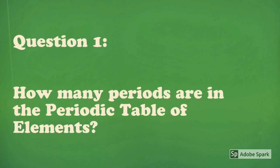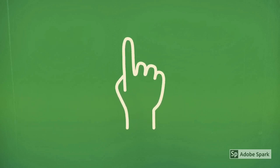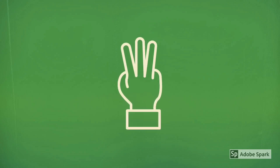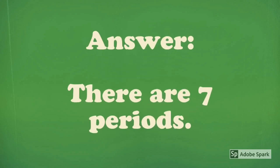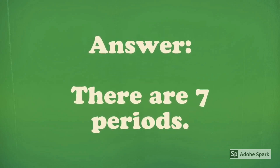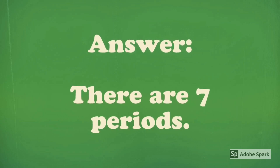Question 1: How many periods are in the Periodic Table of Elements? Answer: There are 7 periods in the Periodic Table of Elements.